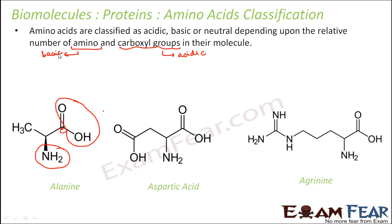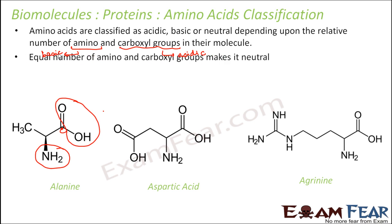If you have more number of acidic groups, then that amino acid will be acidic. If you have more basic groups, then the amino acid will be basic. If there are equal numbers of amino and carboxyl groups, then it is a neutral amino acid. For example, alanine is a neutral amino acid because it has one carboxyl group and one amino group — equal numbers, so it is neither acidic nor basic.